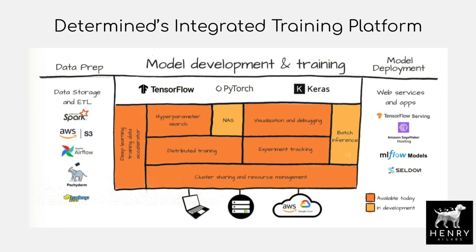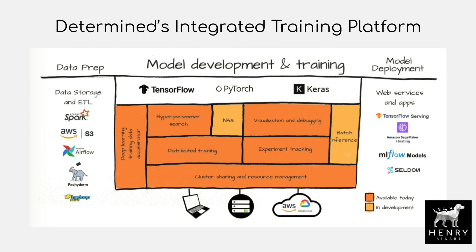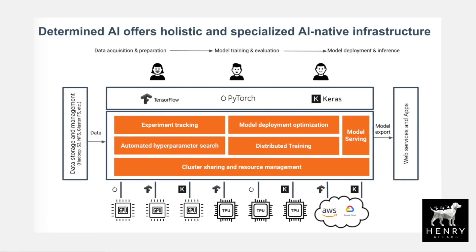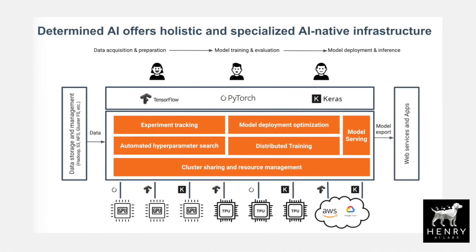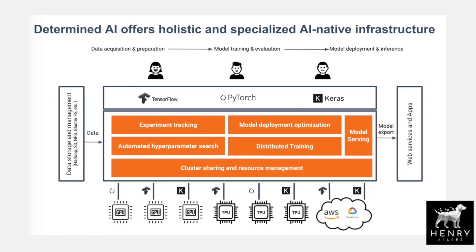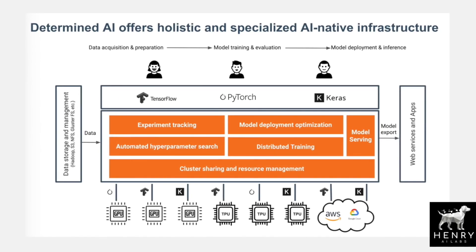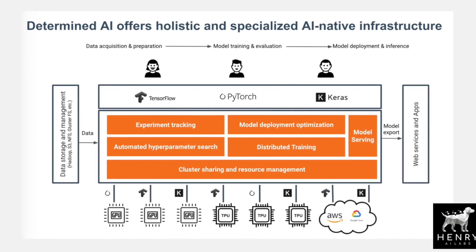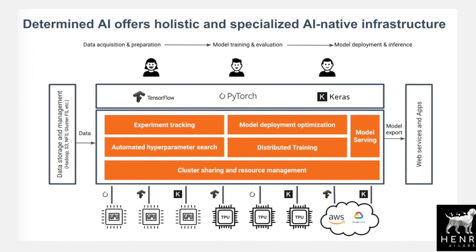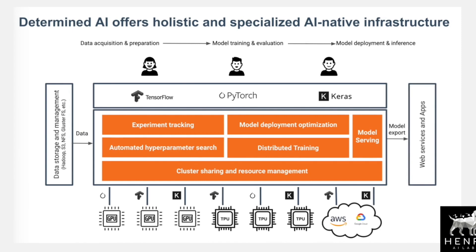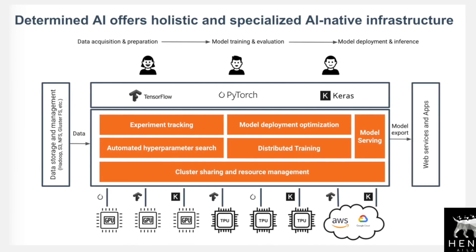If you're looking to get into deep learning research, you'll need to have some serious engineering power behind your experiments. Without a platform like Determined AI, setting up large-scale deep learning experiments can be a serious headache. You want to be testing out ideas and writing papers, not debugging distributed training code, facing obscure errors, or having your entire experiment crash altogether.